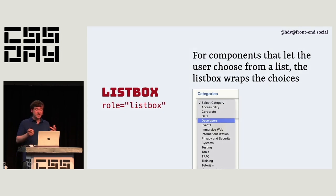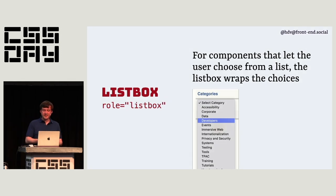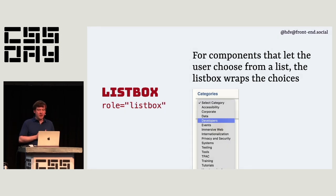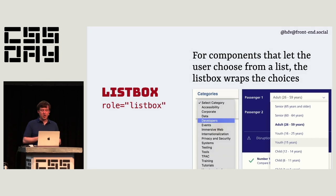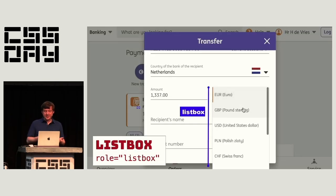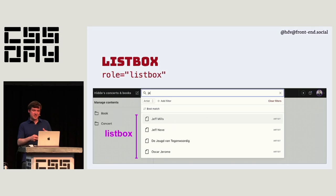The second option is listbox. Listboxes are components that let the user choose from a list of things. The most common is the native select element — the thing that pops out is a list box with that role. This also applies when you build your own select menu or use the new selectmenu element. Selecting a currency when transferring money, or a combo box where one component is a list of choices — that list of choices is also a listbox.